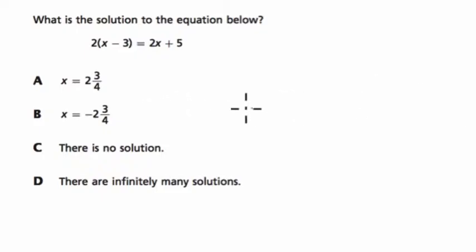Okay, so in this problem, they want to know what is the solution to the equation below. We have 2 times x minus 3 equals 2x plus 5. They give a couple of choices, and notice in C, they say there is no solution.